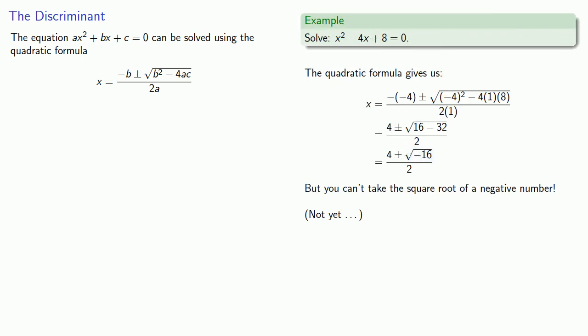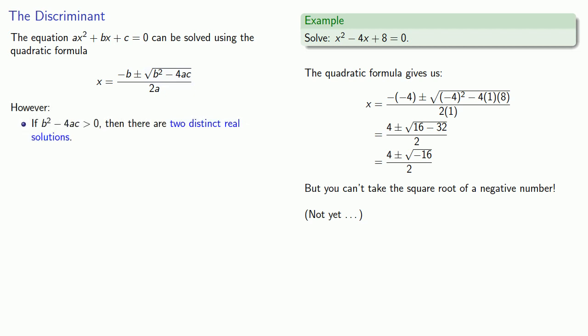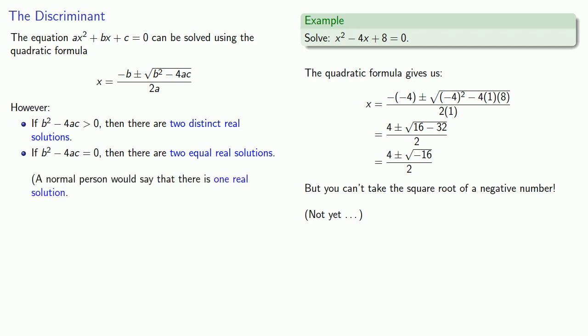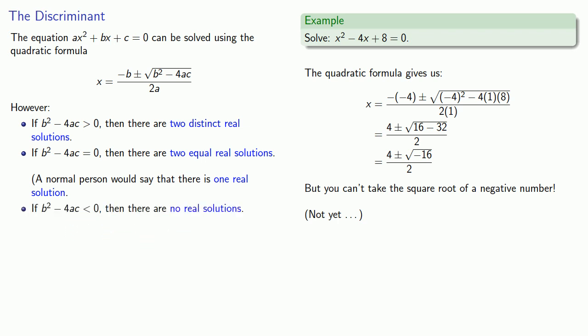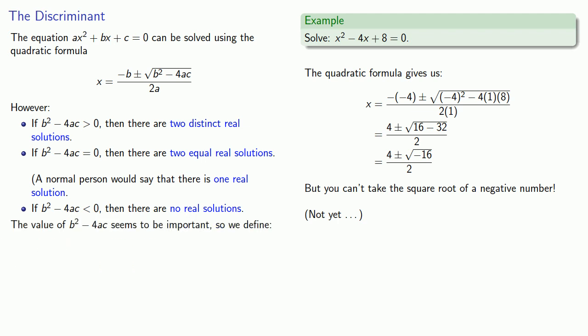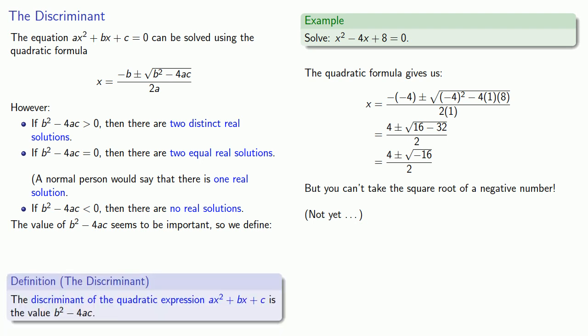The thing inside the square root is going to be important. If b squared minus 4ac is positive, there are two distinct real solutions. If b squared minus 4ac equals zero, there are two equal real solutions — a normal person would say one, but mathematicians aren't normal people. And if b squared minus 4ac is less than zero, there are no real solutions. This value, b squared minus 4ac, is called the discriminant. The discriminant of the quadratic expression ax squared plus bx plus c is the value b squared minus 4ac.